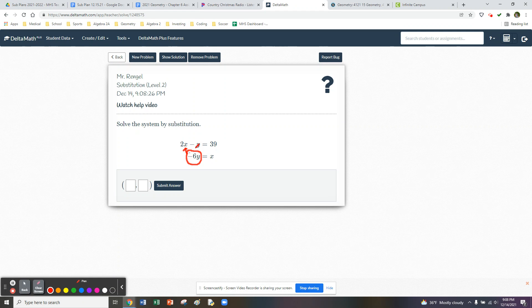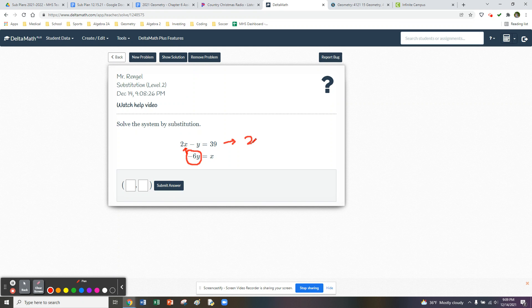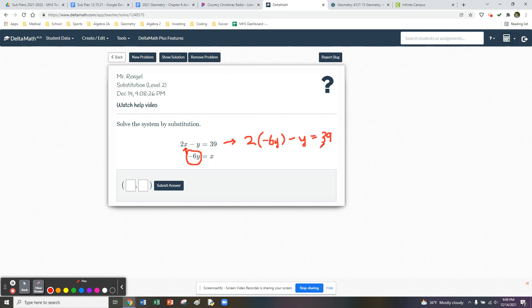Now we can put negative 6y in for x. We're going to change this top equation. So instead of 2x minus y equals 39, we're going to go 2 times negative 6y minus y equals 39. We now created an equation that's got all one variable, so we'll continue solving.